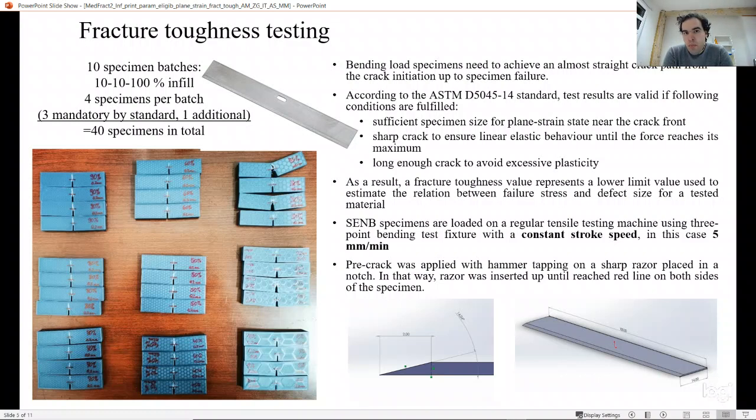Concerning the bending load specimen, which are the SENB specimens, you need to create a straight crack path from the crack initiation up to specimen failure for the test to be valid. The specimens must have sufficient size for the plane strain criterion to be met. The crack must be sharp enough to ensure linear elastic behavior until the reached maximum force, and the pre-crack must be long enough to avoid excessive plasticity.